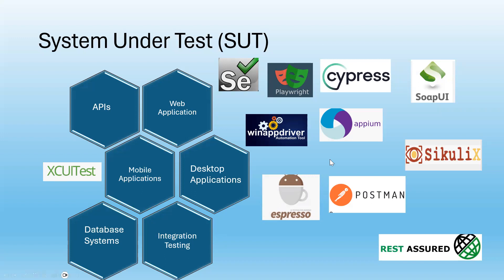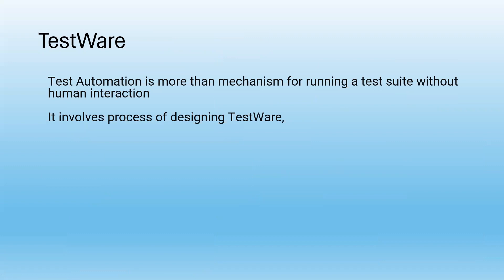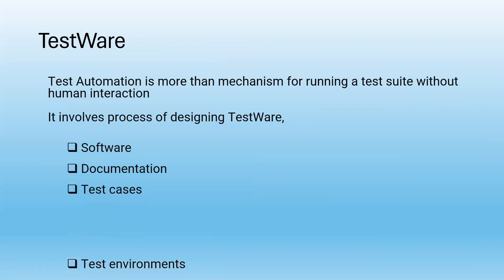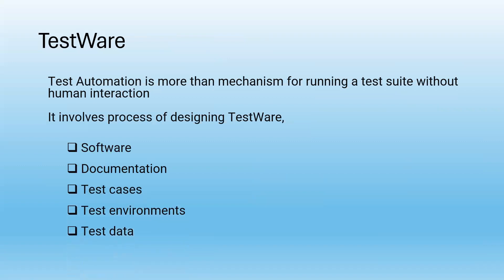Let's look at testwares. What is testware? Test automation is a mechanism of running a test suite with minimum human interaction. Other than running tests without human interaction, there is a process alongside test automation called designing of testware. We have different testwares — software, documentation design, test case design, test environments, and test data. It is essential for the success of the automation testing process to have well-designed testware.